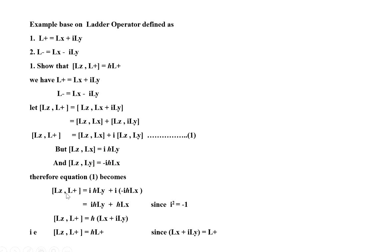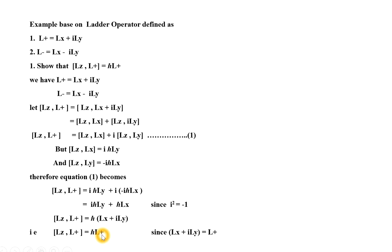The equation becomes: commutator bracket LZ comma L plus equals iH-cross LY plus i times bracket minus iH-cross LX. The product of i times i is i-squared, which equals minus 1. Therefore, the two minus signs become plus, giving LZ comma L plus equals iH-cross LY plus H-cross LX. Taking H-cross as a common factor outside gives H-cross times bracket LX plus iLY, which is precisely the definition of the rising operator L plus. Therefore, LZ comma L plus equals H-cross L plus.